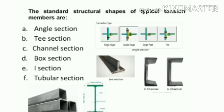The fourth type is built-up sections, which are formed by two or more members. When a single rolled steel section cannot furnish the required area, built-up sections are used. Double angle sections with unequal legs are extensively used as tension members in roof trusses. A built-up section may be made of two channels placed back to back with a gusset plate in between them.